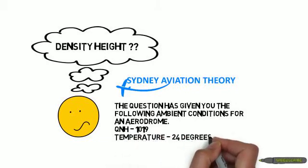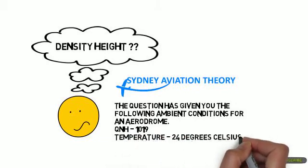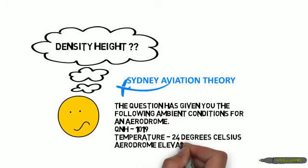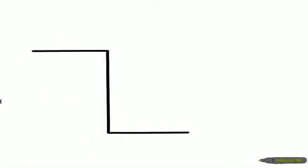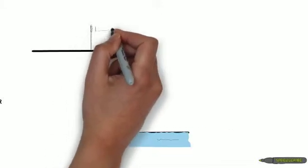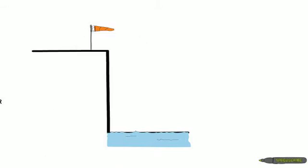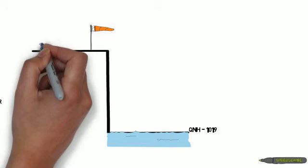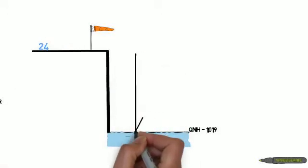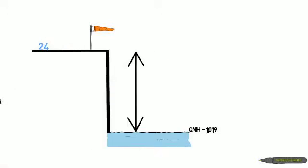There's a golden rule here that makes all the difference: you must draw a diagram. Here's how I do it. You're given the variables in a question. Start with drawing in mean sea level, followed by the aerodrome. Fill in the details from the question. In this example, it's a QNH of 1019, a temperature at the aerodrome of 24 degrees, and an elevation of 2,500 feet.